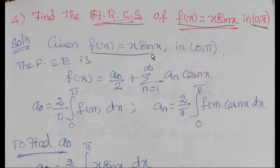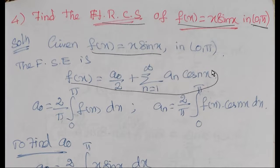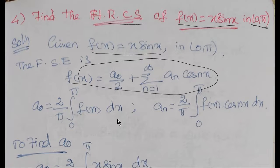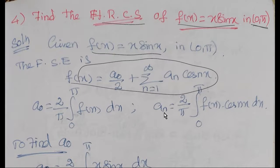The half range cosine series formula is a₀/2 plus summation of aₙ·cos(nx). We will find a₀ using the formula (2/π)·∫₀^π f(x) dx, and aₙ using (2/π)·∫₀^π f(x)·cos(nx) dx.